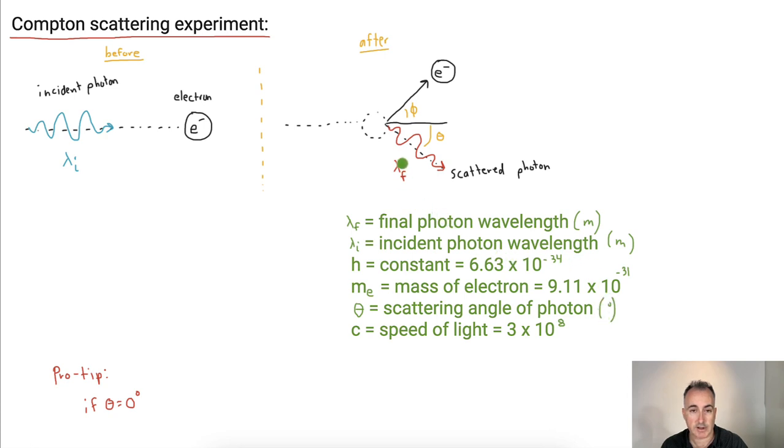Let's actually go ahead and figure out or write down this equation. This is in your data booklet, you don't have to memorize it. Lambda f minus lambda i, in other words this change in wavelength. When a photon comes in and then changes, we can also call that delta lambda.